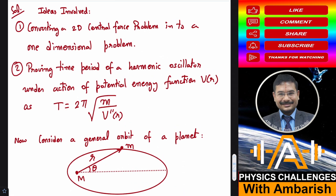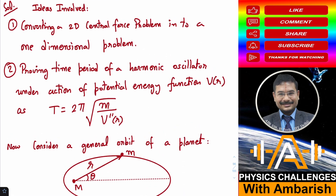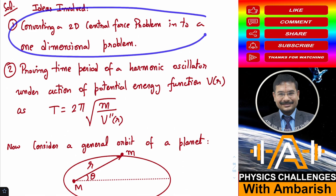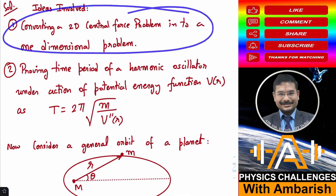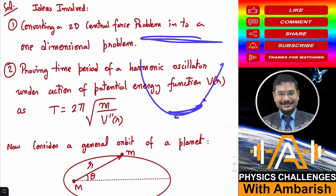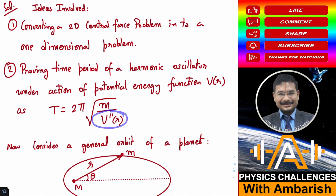So what are the concepts we are going to learn in this video? First, how to convert a two-dimensional central force problem into a one-dimensional problem. You know that a general central force orbit is a function of R and theta — two variables, R as a function of time and theta as a function of time. But there is a very neat technique by which we can convert the entire problem into just R and t only — we can eliminate theta using a neat trick. The other concept is: when a particle oscillates in some potential energy function, the time period is simply T equals 2π times the square root of M divided by the second derivative of the potential energy. We are going to prove both these things and then apply them to the current problem.